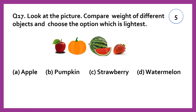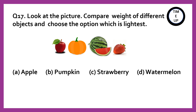Look at the picture and compare the weight of different objects and choose the option which is lightest. Answer: strawberry. Among apple, pumpkin, watermelon, and strawberry, strawberry is the lightest.